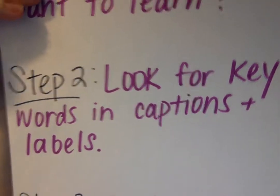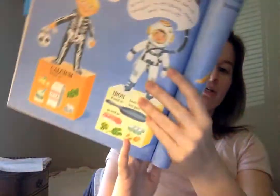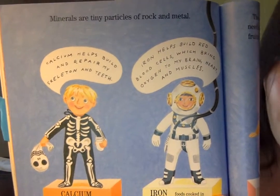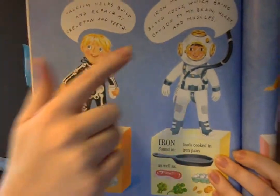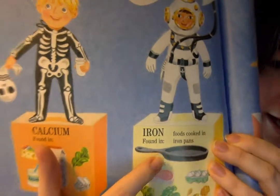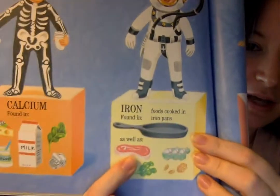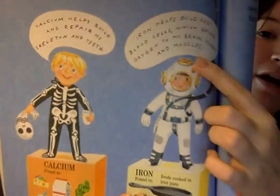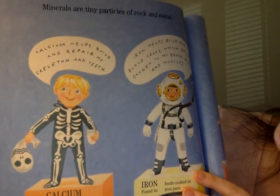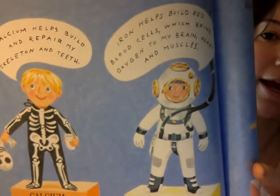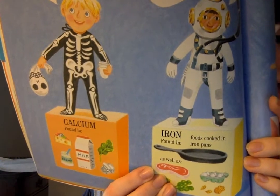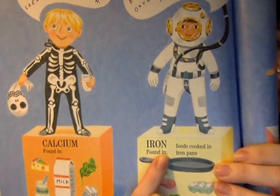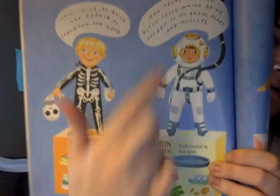That is what we want to learn about in our special text. Step two: look for keywords in captions and labels. We have to go to page 21 to answer this part. At the top I see, 'minerals are tiny particles of rock and metal.' And then right here — I see the word iron. It says iron is found in foods cooked in iron pans: steak, eggs, some leafy greens. And then up here in the speech bubble, it says iron helps build red blood cells, which bring oxygen to my brain, heart, and muscles. That's the keyword I looked for — iron — because that's what the question is asking me, and I found it twice in this special text.